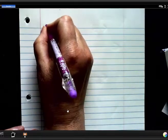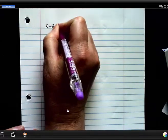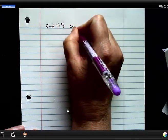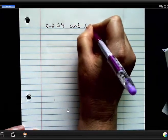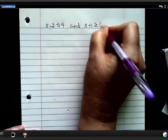All right, so let's talk about a compound inequality where we have two different inequalities to solve. I've got the inequality x minus 2 is less than or equal to 4, and x plus 1 is greater than or equal to 6.